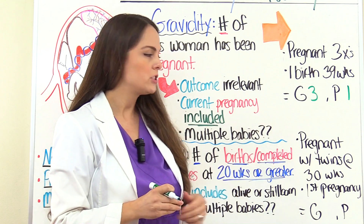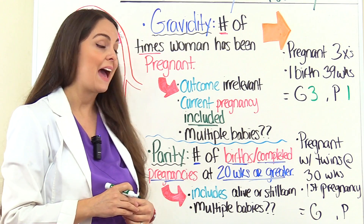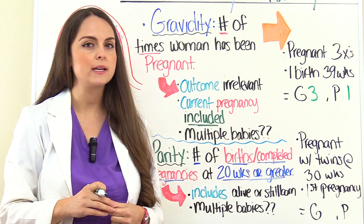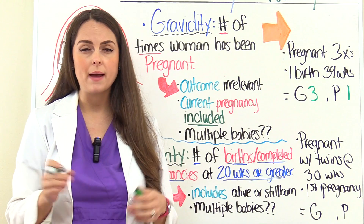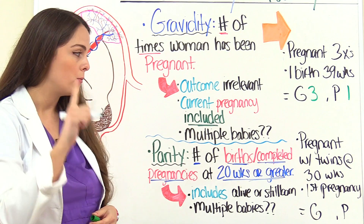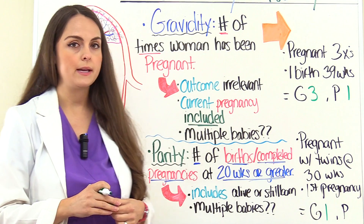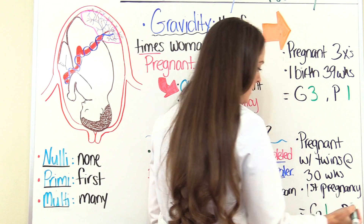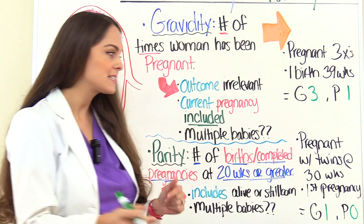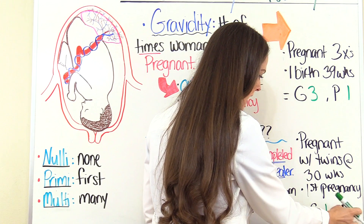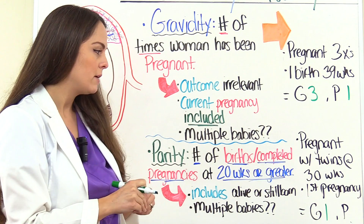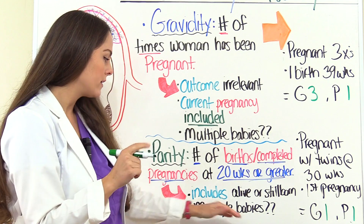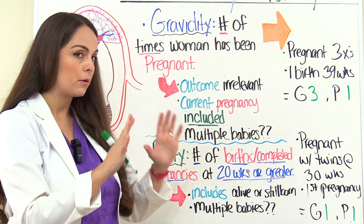Now let's look at this scenario: the patient is currently pregnant with twins at 30 weeks, and this is her first pregnancy. Her Gravida would be one — it doesn't matter that she's pregnant with twins, we're not calculating the number of babies, just this pregnancy. Her Para would be zero because she hasn't completed the pregnancy yet. Now if we switch it up and say she has completed the pregnancy with the twins born at 37 weeks, that would change the Parity to one, because she has completed the pregnancy — we're calculating pregnancies completed, not the number of babies born.